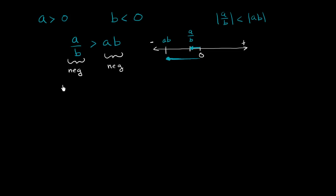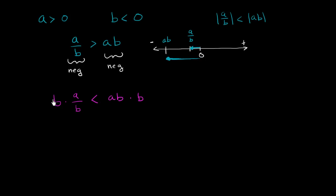So b times a over b — we know it's negative — is going to be less than a times b times b. If we just multiply it out, the b's cancel, and we get a is less than a times b squared.